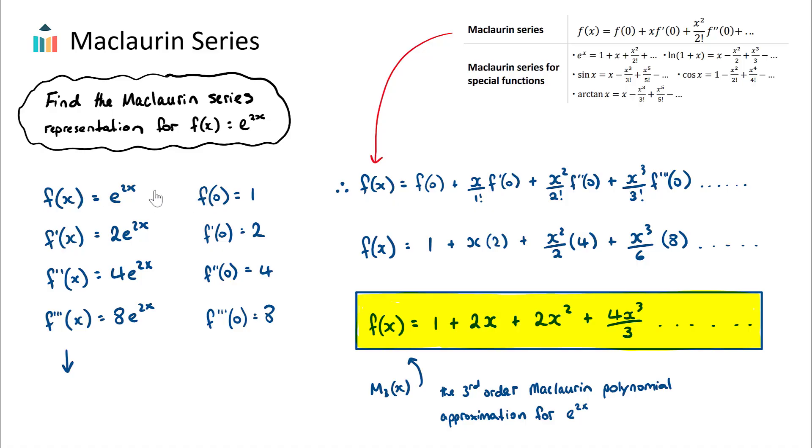Let's substitute in 0 for all of these. We will get f of 0 to be equal to e to the power of 2 times 0. e to the power of 0 is just 1. And then we'll have 2 times e to the power of 0, which is 2. We have 4 times e to the power of 0, which is 4. And then we have 8 times e to the power of 0, which is just 8. As the derivatives could continue on, we could continue to sub in 0s and we would get all of these terms.